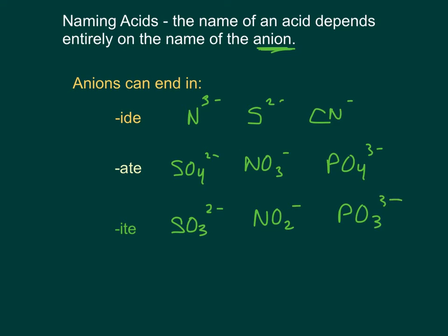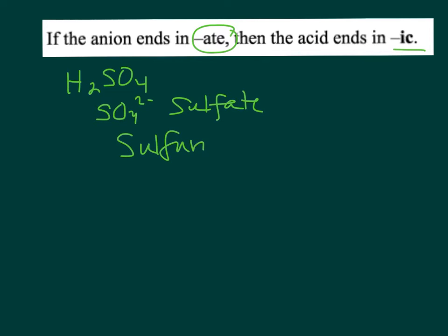So this is how we decide how we're going to name our acids. These are the three different ways that anions can end. If an anion ends in -ate, the acid ends in -ic. So, for instance, if I look at H2SO4, the anion in there is SO4 2-, and that is called sulfate. That means the acid is called sulfuric acid.